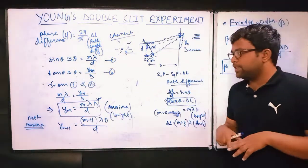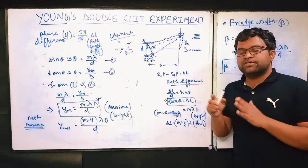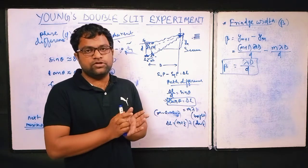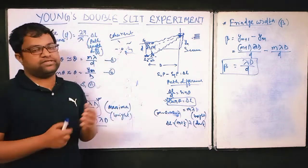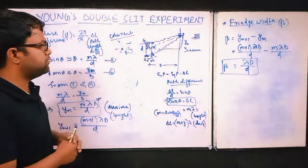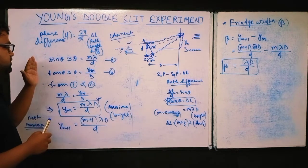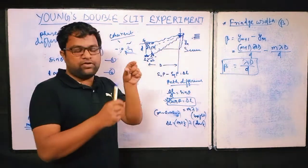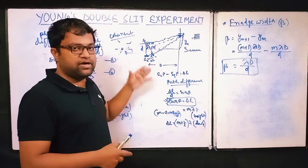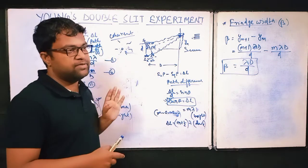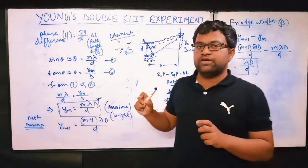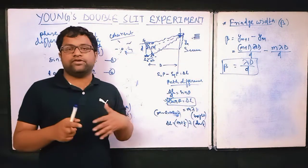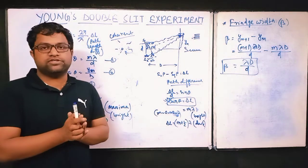In the next video, we will discuss interference, intensity, and the diffraction pattern. Practice some numericals based on these formulas and try to understand how path difference equal to lambda gives a maximum. If the concepts of maxima and minima are still unclear, write in the comment box and I'll try to clarify or make another video. Thank you for watching — see you in the next video.